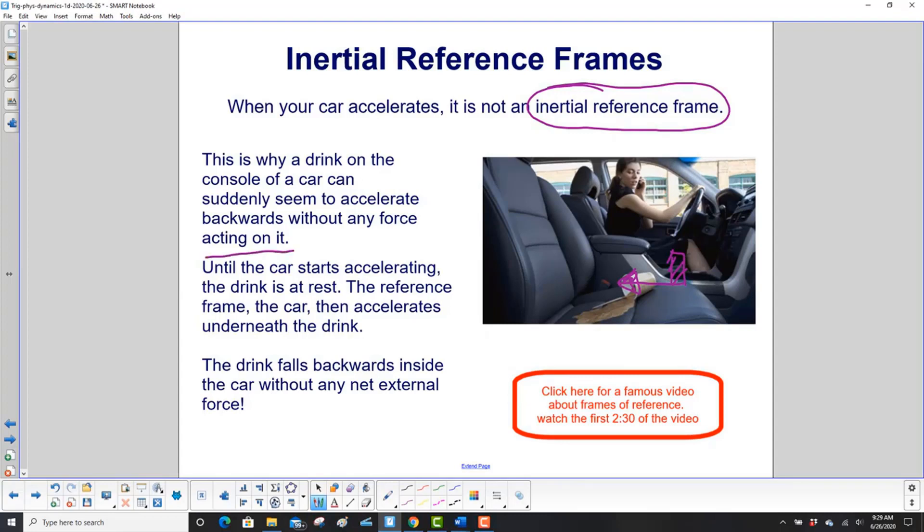Well, what happened is the car started accelerating. The drink tried to stay at rest and it couldn't because the car just accelerated out from under it. So from the point of view of somebody in the car, that cup moved backwards. But in reality, it was staying in the same place and the car accelerated forwards.